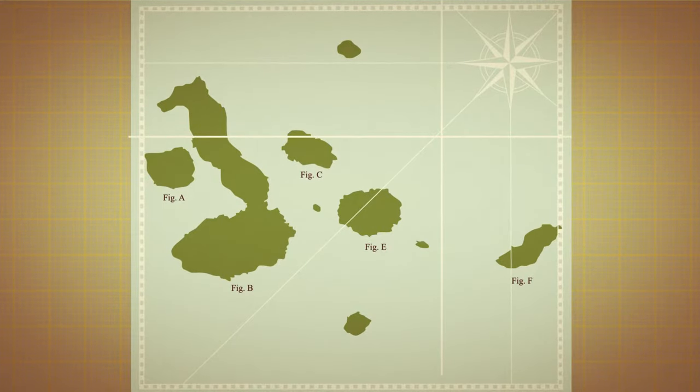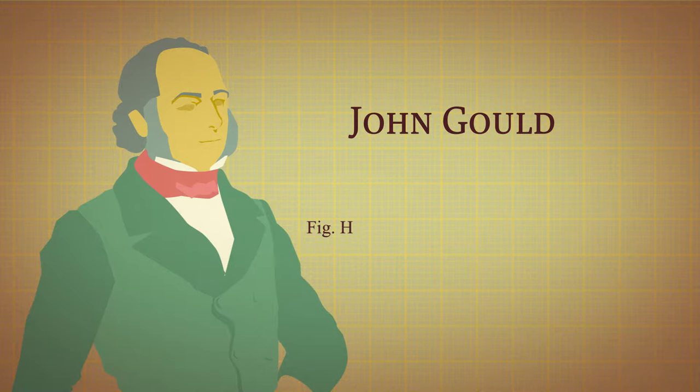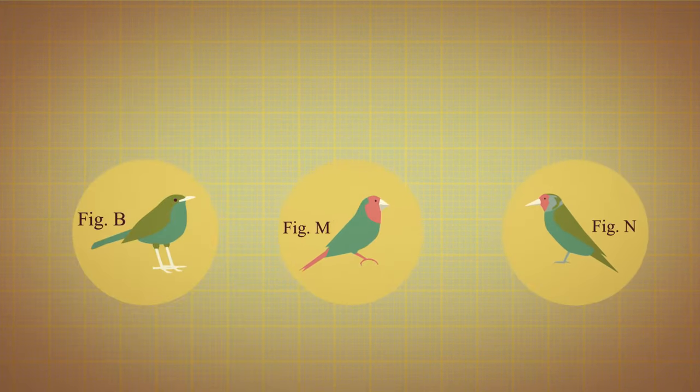On his return, Darwin worked closely with ornithologist John Gould to study the varying species of finch he had brought back from the Galapagos. They noticed that the finch species varied in the size and shape of their beaks and that this variation was based on their diets.